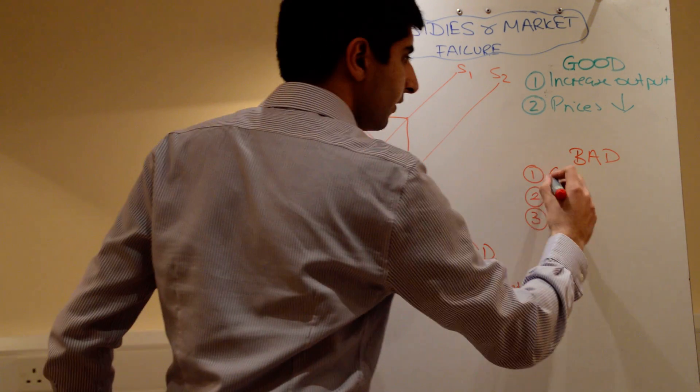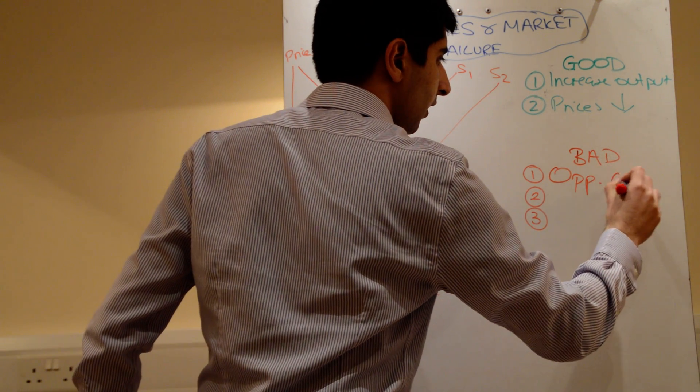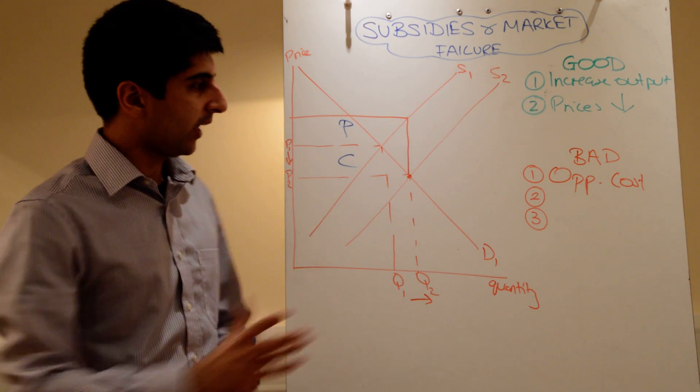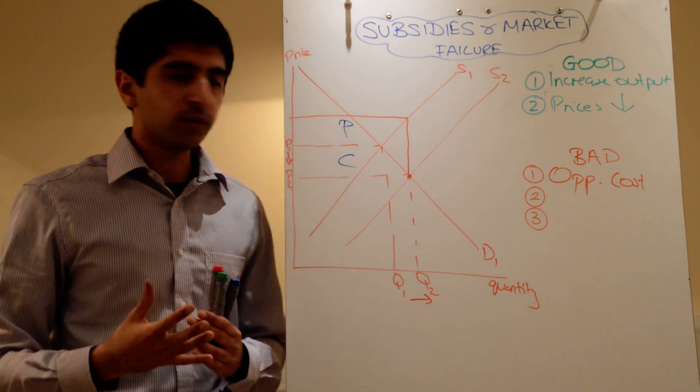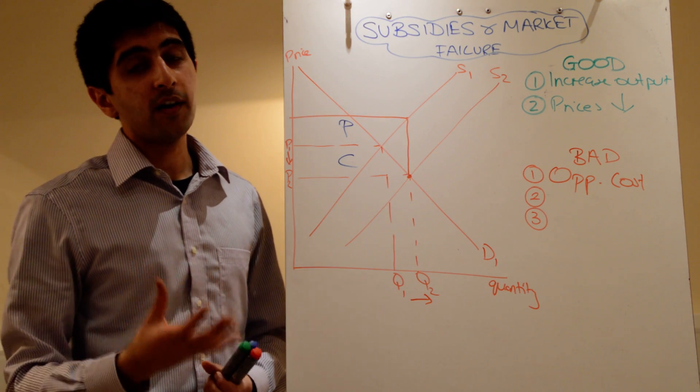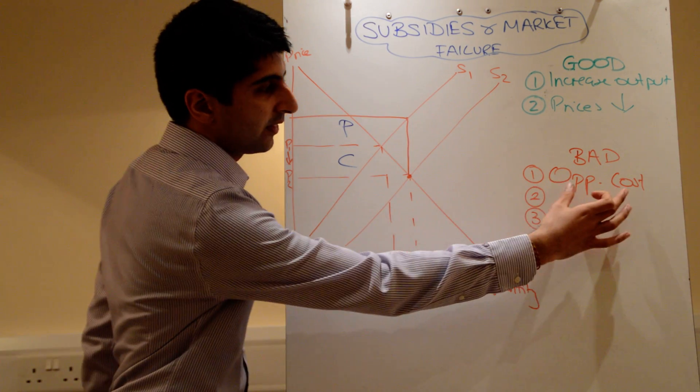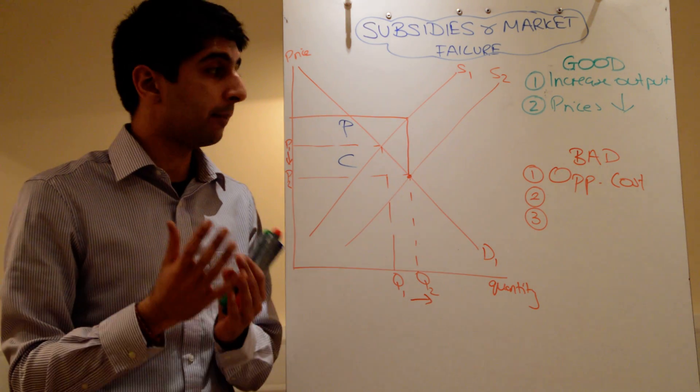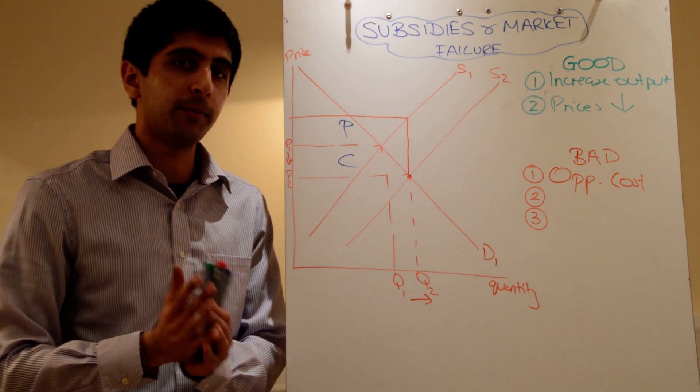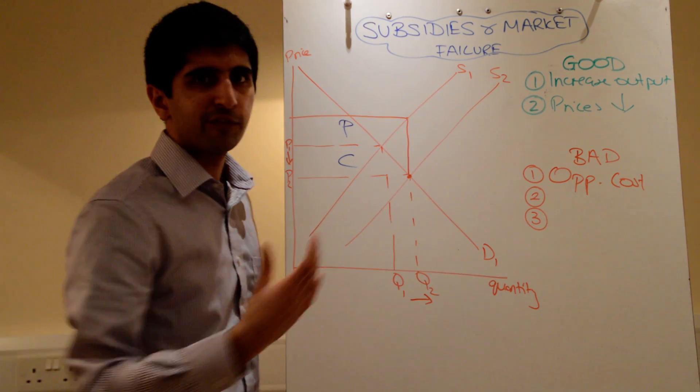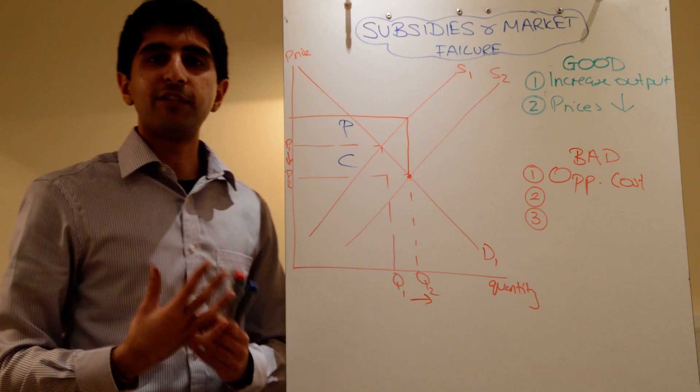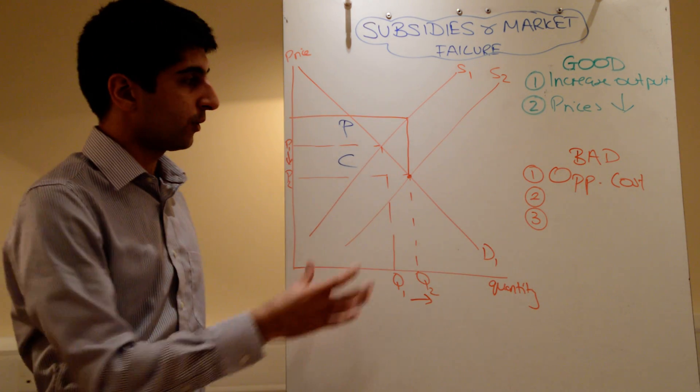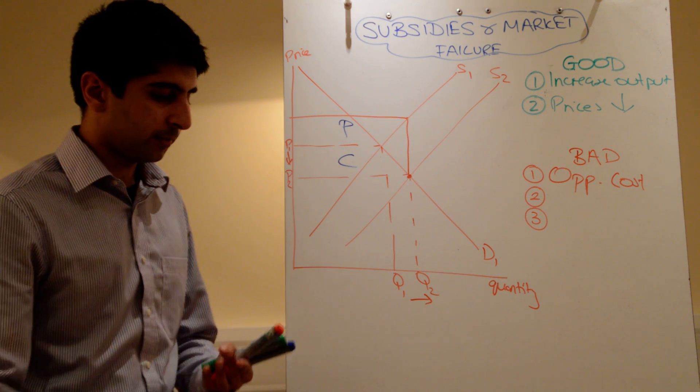But then, why is it bad? Why is a subsidy potentially a bad thing? Well, subsidies are very, very expensive. That total rectangle, the size of the subsidy, the total value of the subsidy is very, very large, and that will carry a large opportunity cost for the government. Could that money have best been used elsewhere for better purposes? Where has that money actually come from? Has it been taken away from different areas of spending? But there's probably a very, very large opportunity cost involved in actually imposing this subsidy in the first place.